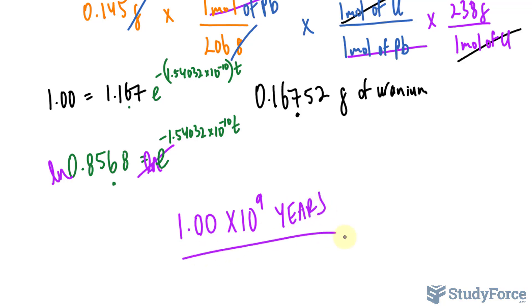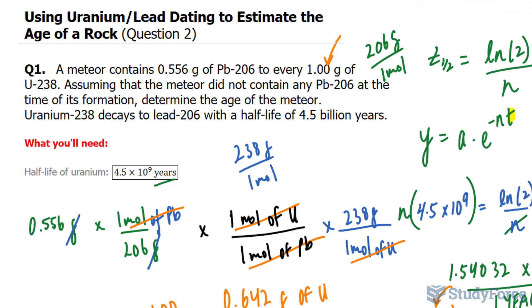And if you compare this to the half-life, the numbers do add up and they make sense. And there you have it. That is how to use uranium-lead dating to estimate the age of a rock.